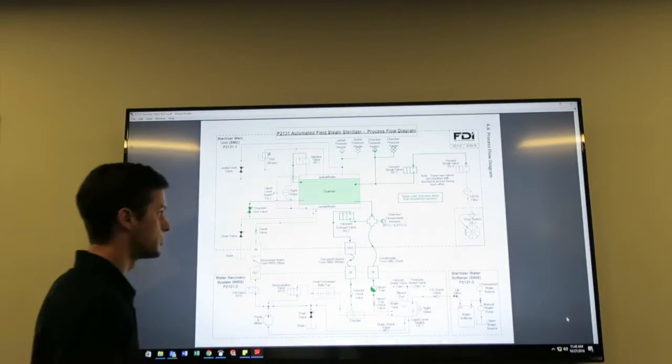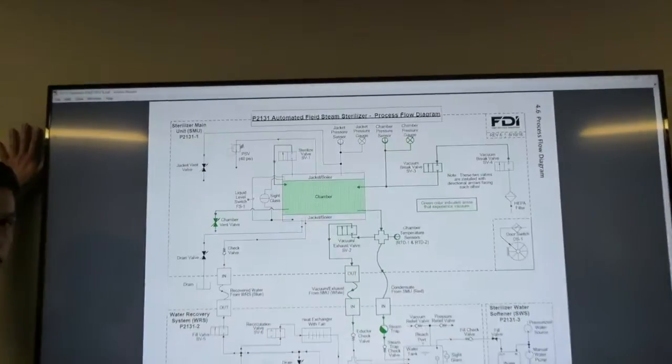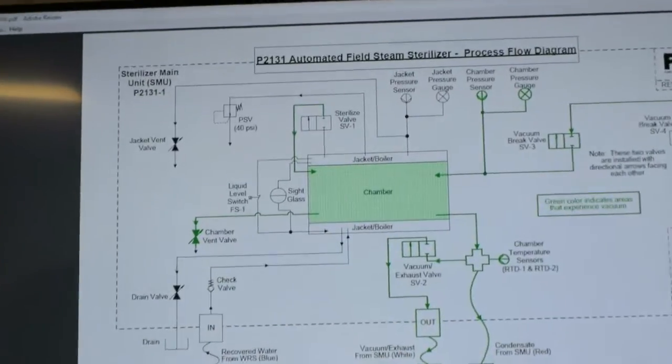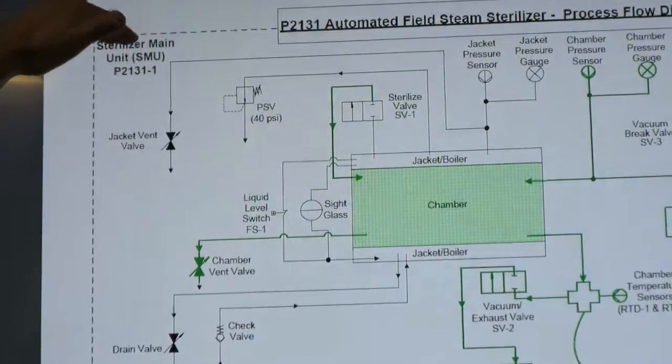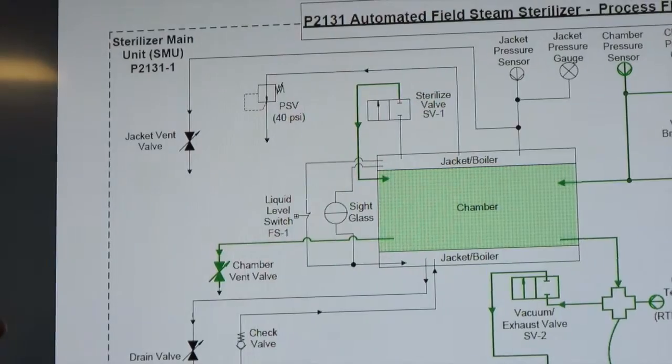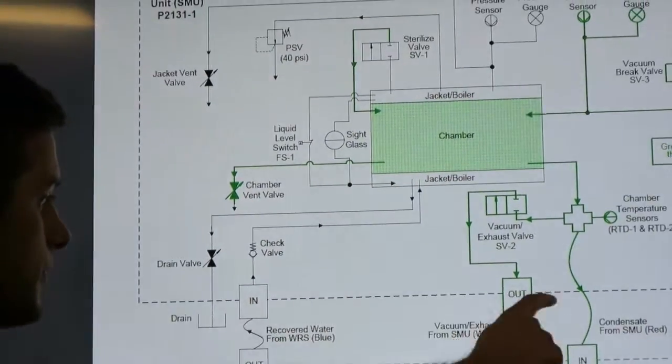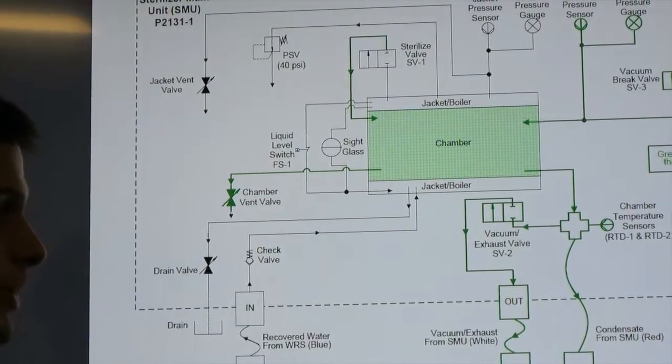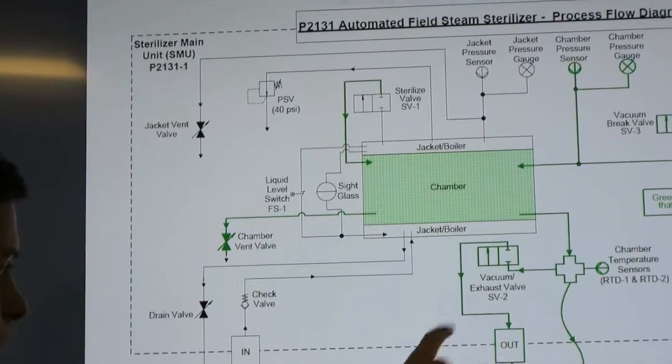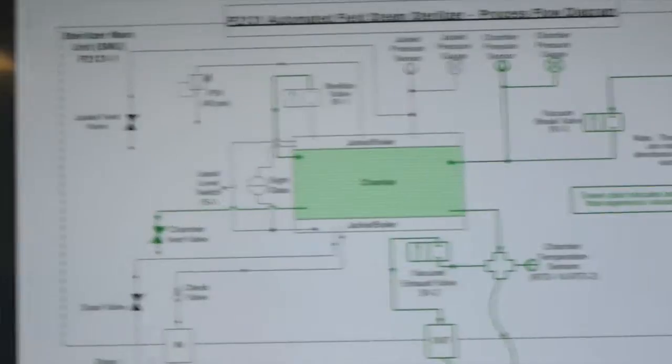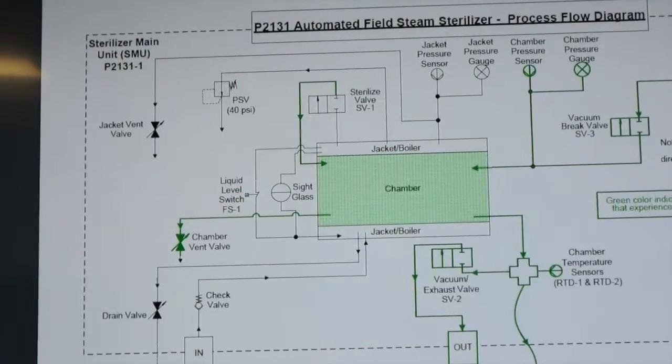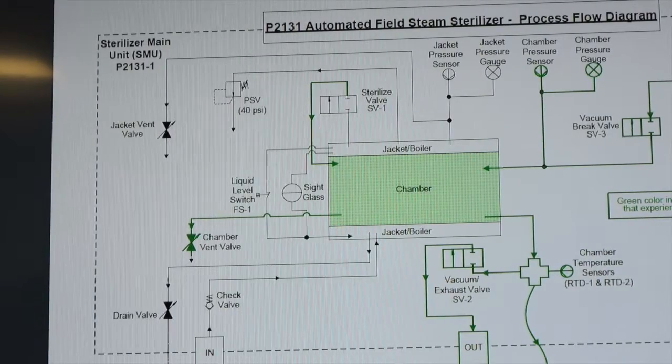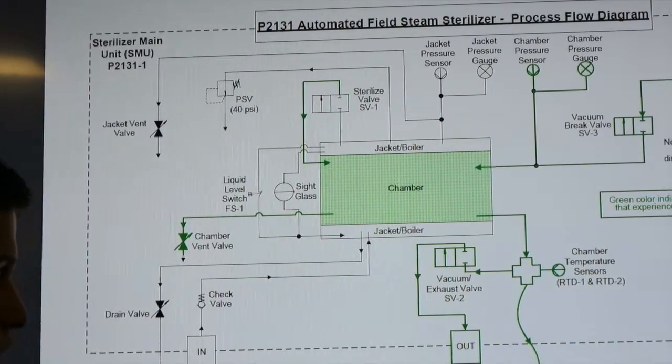So if we zoom in here, just a big picture overview. Up here on the top is the sterilizer main unit. So anything in this dashed line on the top is the sterilizer main unit. What's crossing the line are the three hoses that connect the sterilizer main unit to the water recovery system. So on the bottom, anything in this dashed line is the water recovery system.